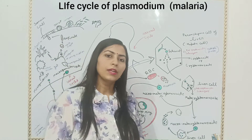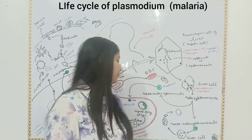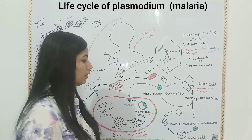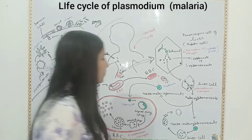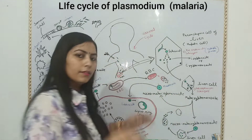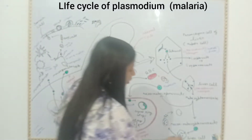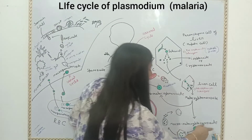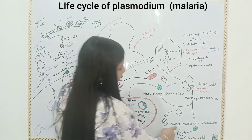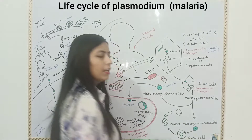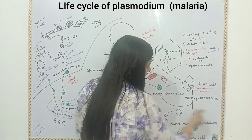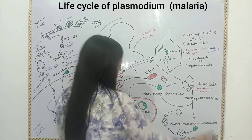This Metacryptomerozoite can be of two types. First, Macrometacryptomerozoite, which is large in size. And second is Micrometacryptomerozoite, which is smaller in comparison to Macrometacryptomerozoite. The Macrometacryptomerozoite enters into another liver cell and this cycle again takes place, repeating again and again.